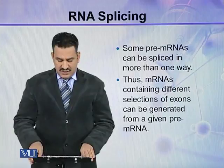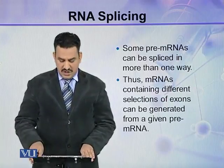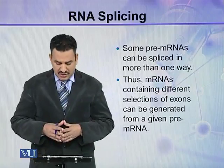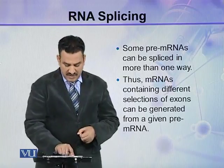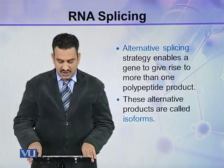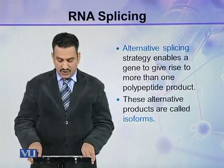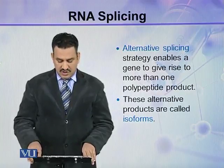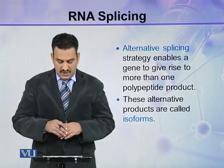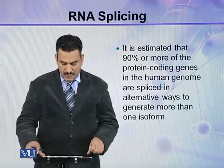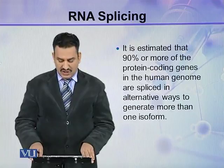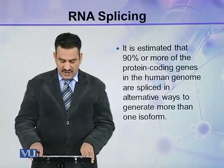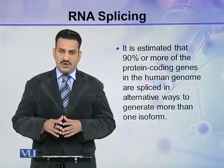Some pre-mRNAs can be spliced in more than one way. Thus, mRNAs containing different selections of exons can be generated from a given pre-mRNA. This alternative splicing strategy enables a gene to give rise to more than one polypeptide product — these alternative products are called isoforms. It is estimated that 90% or more of the protein-coding genes in the human genome are spliced in alternative ways to generate more than one isoform.